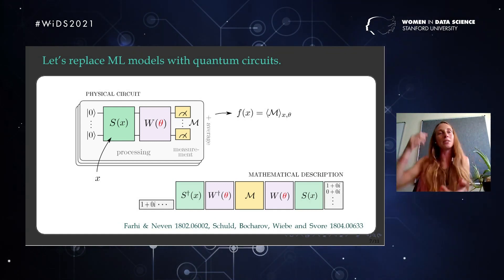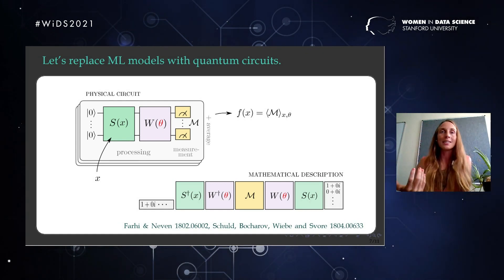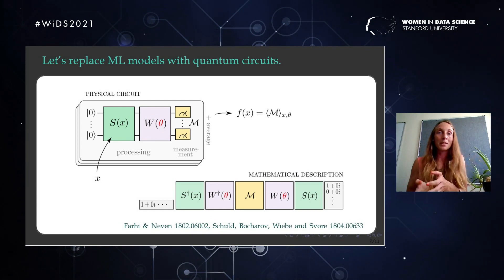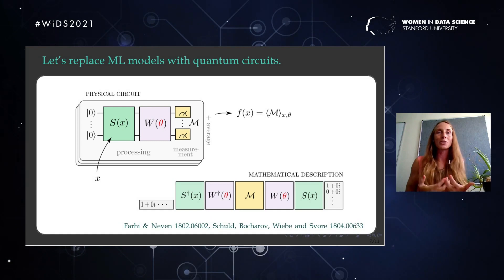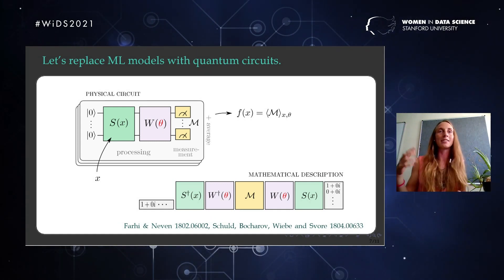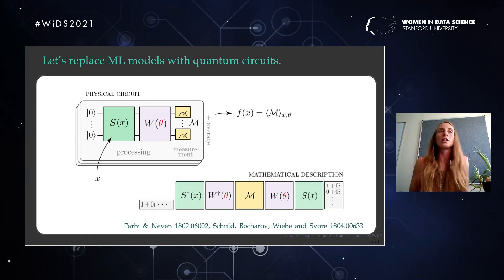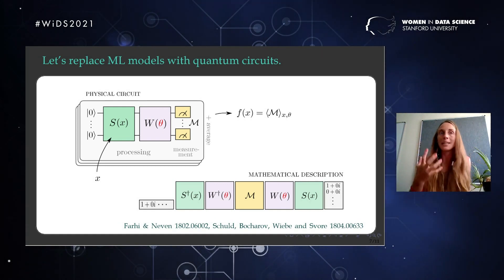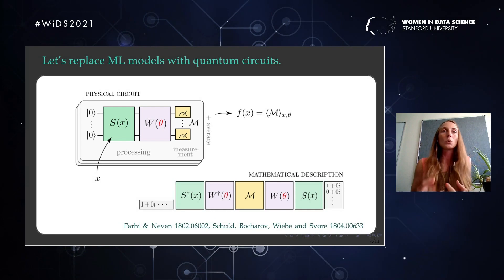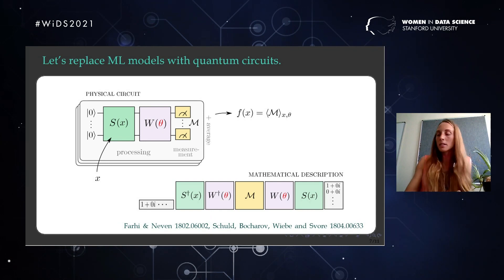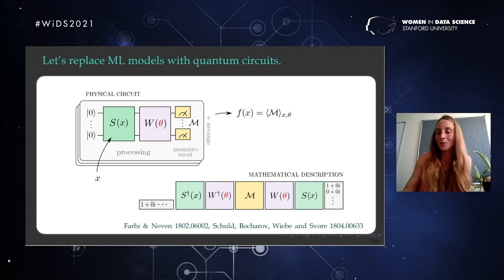Mathematically, data encoding is a matrix-vector multiplication where the matrix depends on x. What happens is you encode input x into a 2^n-dimensional vector describing the probability distribution of your quantum system. This is a big insight from the last few years of quantum machine learning: data encoding into a quantum computer is always something like a feature map that maps into high-dimensional spaces. This is what we replace neural networks with.